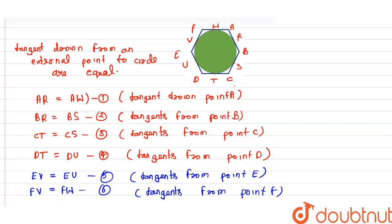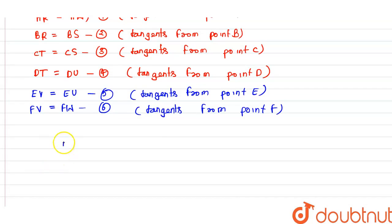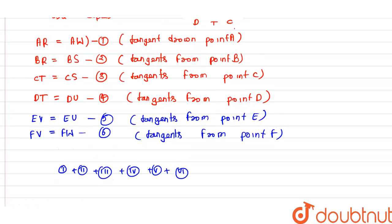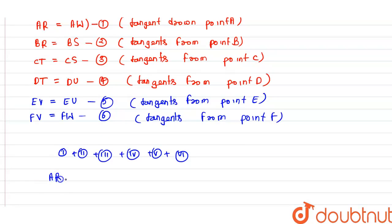And when we add these all 6 equations - 1 plus 2 plus 3 plus 4 plus 5 plus 6 - then we can write AR plus BR plus CT plus DT plus EV plus FV equals AW plus BS plus CS plus DU plus EU plus FW.